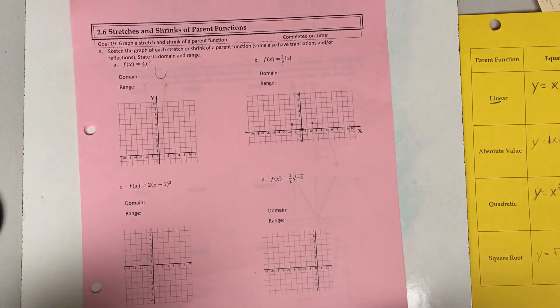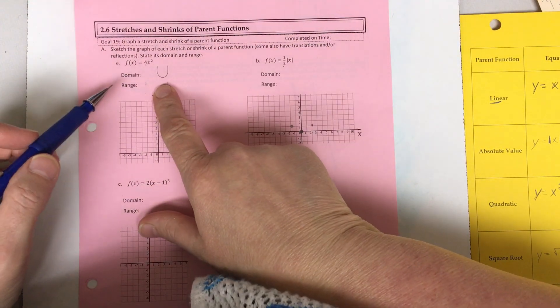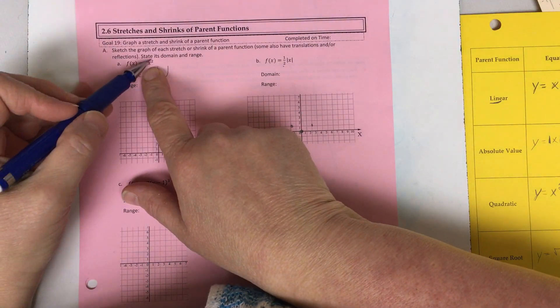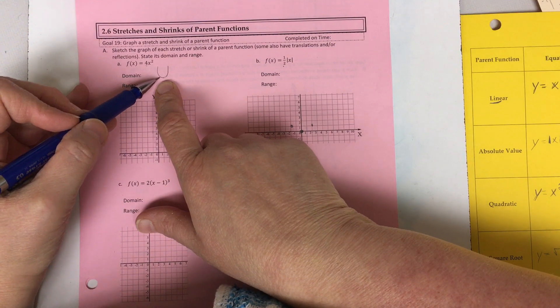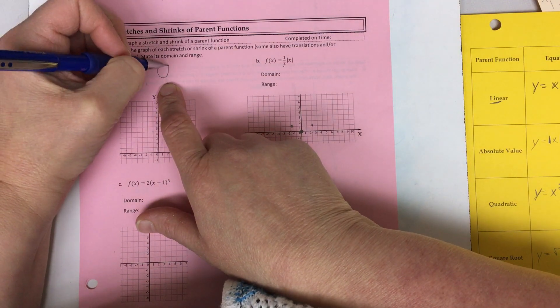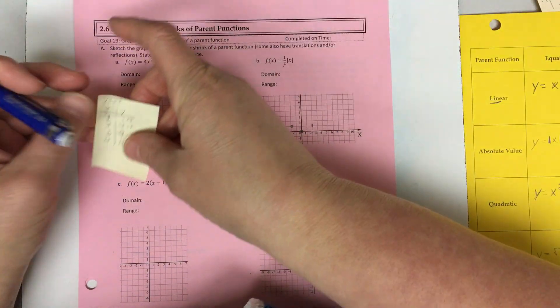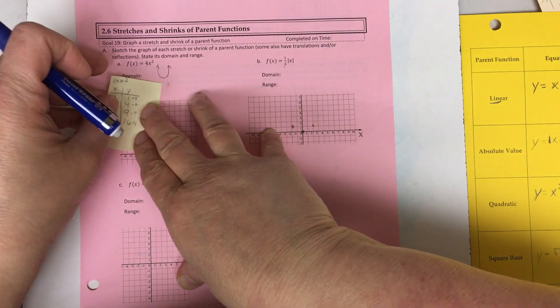Okay this time we are stretching and shrinking our parent functions. So I kind of drew a sketch of what the first one is because I know that this is my quadratic and I have a parabola.